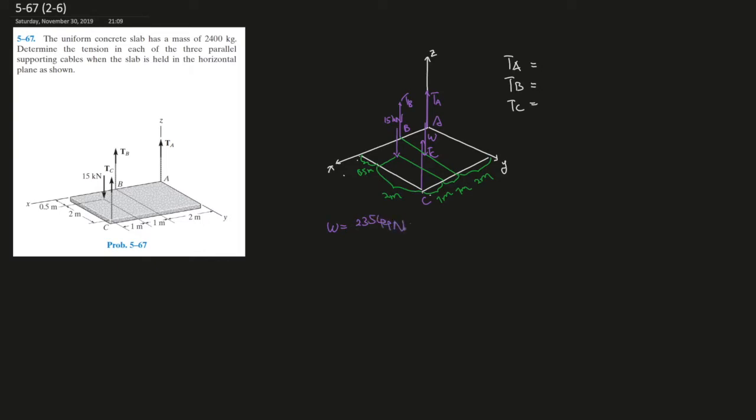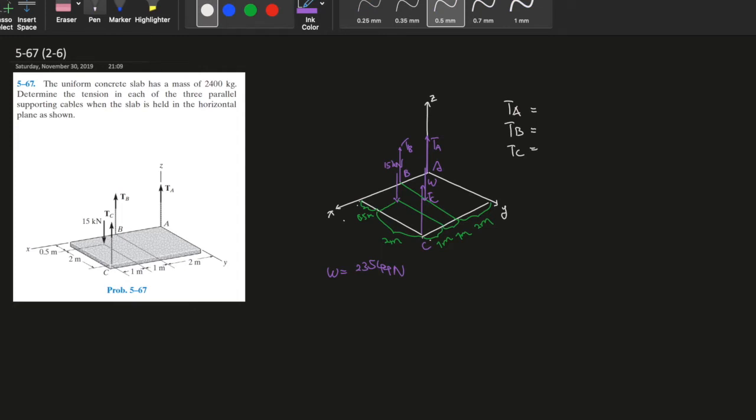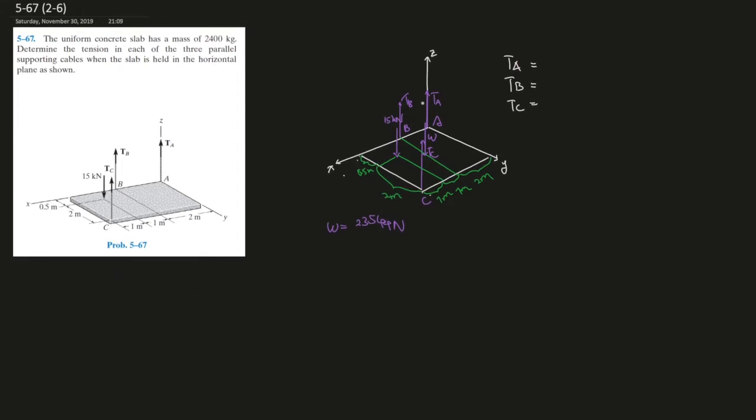We can't use sum of the forces method because there are too many unknowns—there are three unknowns. We only have all the forces in one direction, that is the z-axis. So what we can do is take the next step: use the sum of the moments on an axis. Let's pick whichever one can get rid of the most amount of unknowns. The answer is x, because we can get rid of two unknowns, Tb and Ta, since they are on the axis and don't generate any moments.